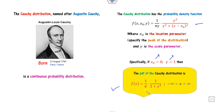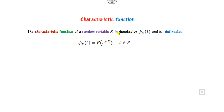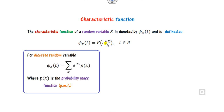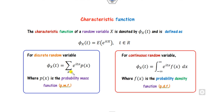Our target is to find the characteristic function of the Cauchy distribution. The characteristic function of any random variable x is denoted as phi, defined as the expected value of e raised to the power iota t x. For a discrete random variable, this expected value is written as a summation where p(x) is the probability mass function. For a continuous random variable, instead of summation you write an integration.